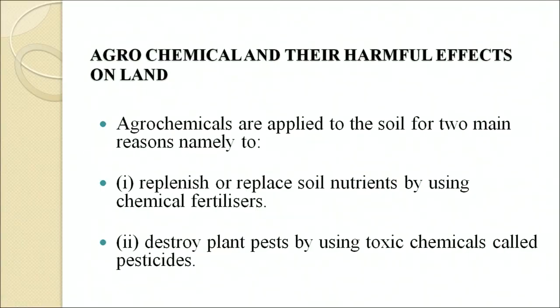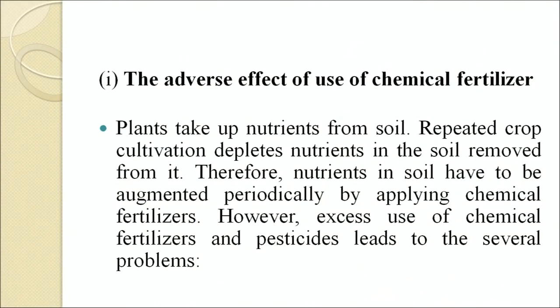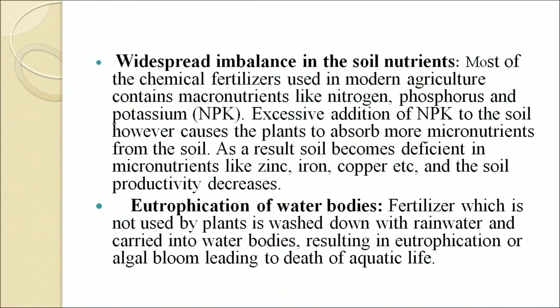Agrochemicals are applied to the soil for two main reasons: to replenish soil nutrients by using chemical fertilizers, and to destroy plant pests by using toxic chemicals called pesticides. The adverse effects of chemical fertilizers: repeated crop cultivation depletes nutrients in the soil, so nutrients must be augmented by applying chemical fertilizers. However, excess use leads to widespread imbalance in soil nutrients. Most chemical fertilizers contain macronutrients like nitrogen, phosphorus and potassium (NPK). Excessive addition of NPK causes plants to absorb more micronutrients, making the soil deficient in micronutrients like iron, zinc and copper, thus decreasing soil productivity.